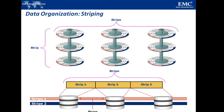If you arrange the disks one above the other, you can see the second figure showing how stripe 1 is spread across all the disks and stripe 2 is also spread across all the disks — one is the top view and the other is the side view.